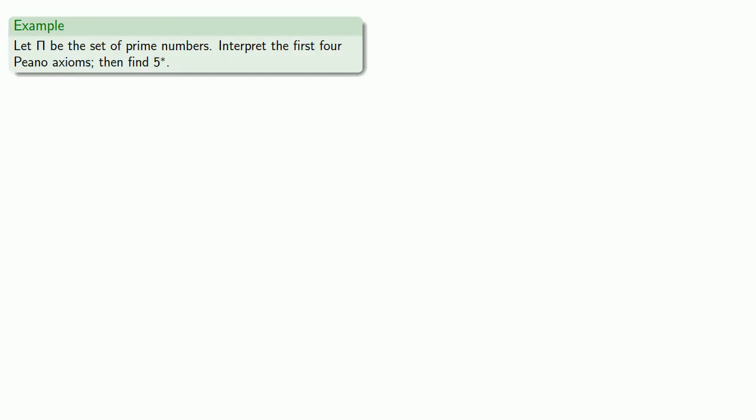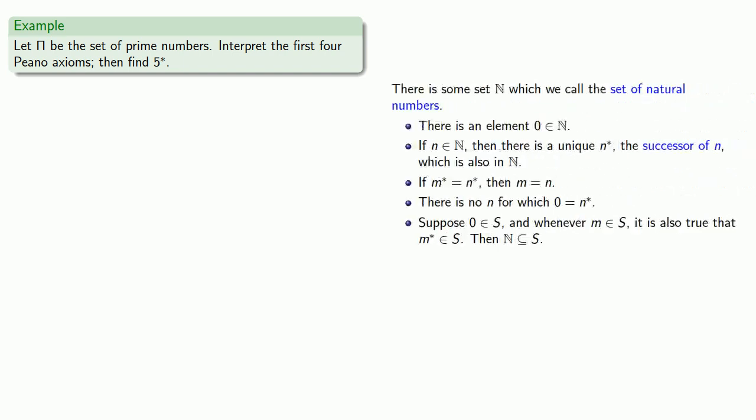For example, let Π be the set of prime numbers. Let's interpret the first four Peano axioms, and then find the successor of five. So let's pull in the Peano axioms, and the first one is easy to translate. There is a set Π of prime numbers.